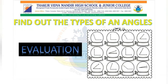Check the second row: right, acute, right, acute. Now check the third row: acute, acute, obtuse, and the last — acute angle.